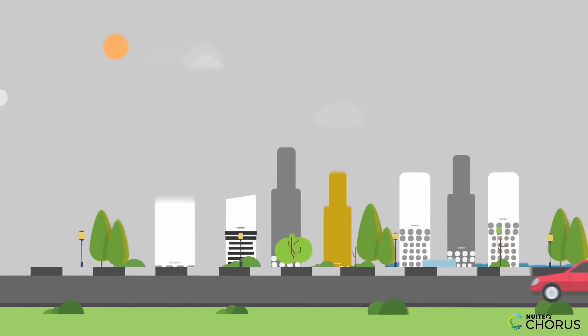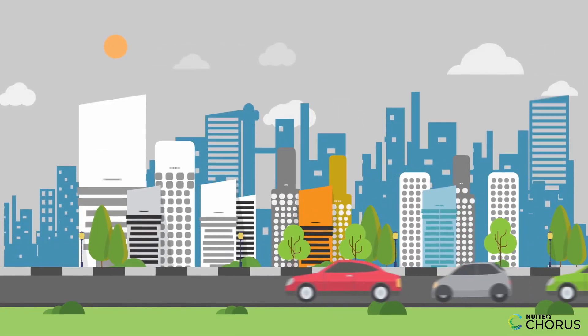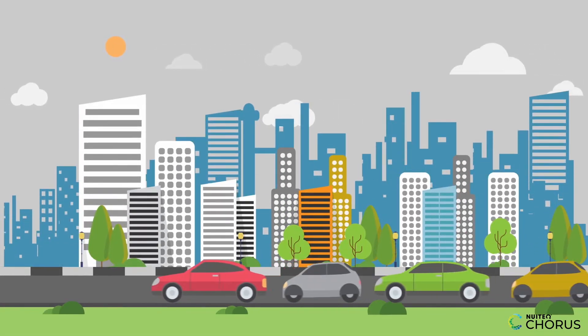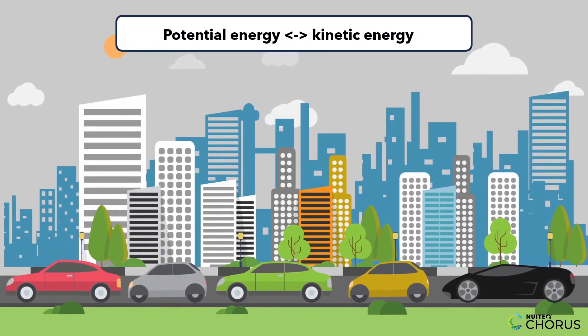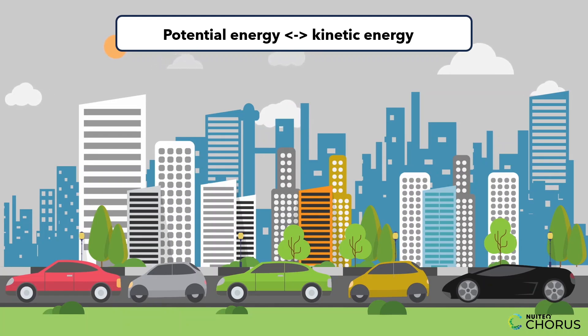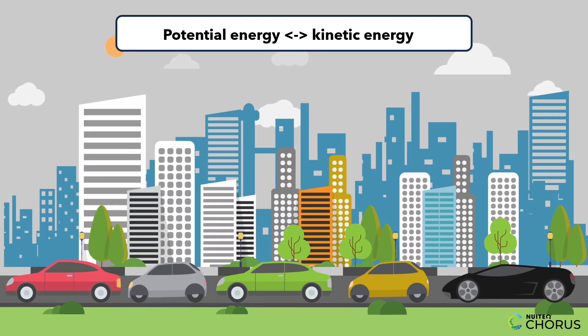Now, let's zoom into a bustling city street. Every time a car brakes or accelerates, energy is transferred between its kinetic and potential forms. This example illustrates how motion affects energy transfer in a dynamic environment.